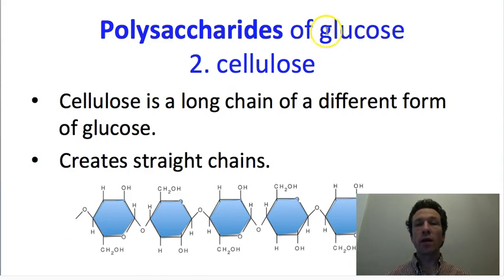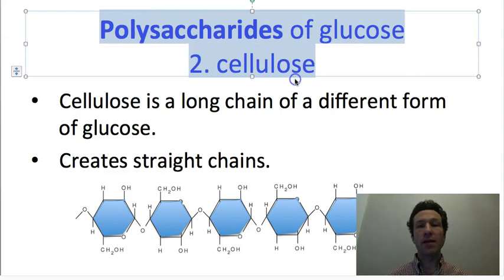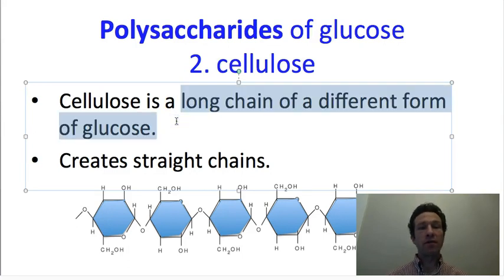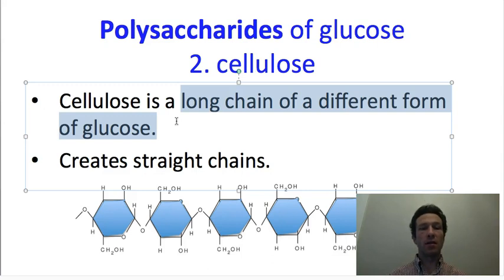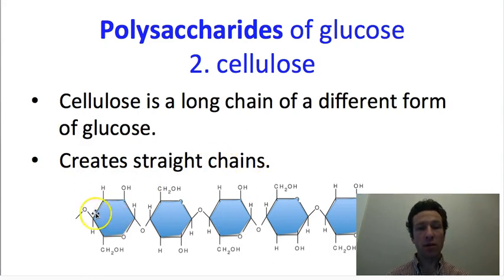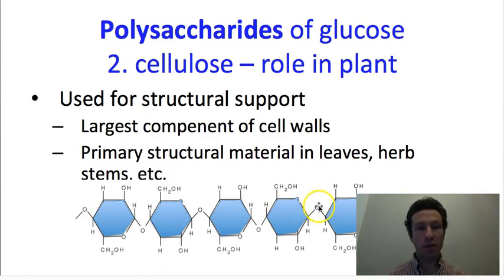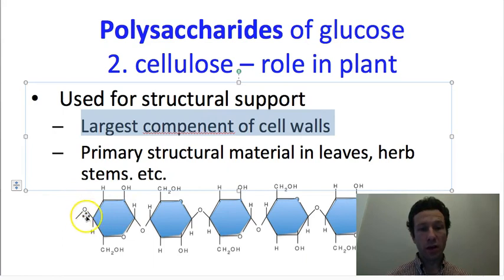A second polysaccharide of glucose is cellulose. This is still a long chain of glucose, but a very slightly different form of glucose. Even though it's still glucose, this different form results in very different chemical properties. One difference is that chains of this form of glucose are straight — they do not form helices, they just form straight lines. Those straight lines allow plants to build long straight fibers composed of many lines lined up next to each other, which are really useful for structural support. Cell walls, for example, are filled with these straight lines of cellulose.